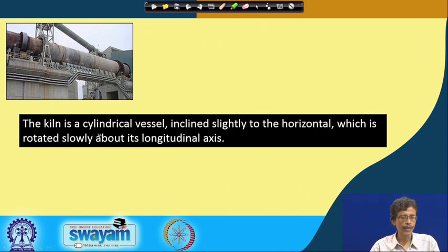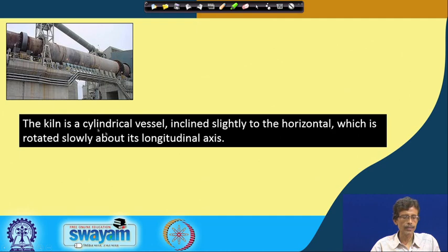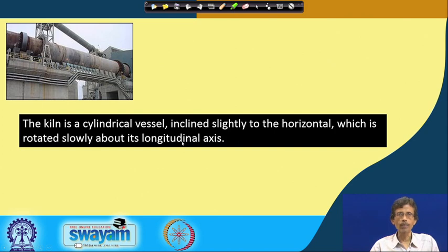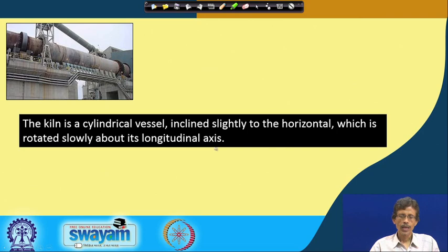This kiln is a cylindrical vessel — you can consider it as a huge long pipe. The structure is cylindrical, like a reaction vessel we consider when we do some reaction in the laboratory or in industry. It is also slightly inclined, not a perfect horizontal disposition, so material can move from one end to the other quite nicely. It is slightly inclined to the horizontal and rotated slowly about its longitudinal axis.